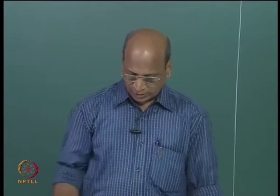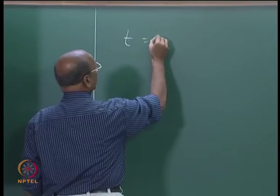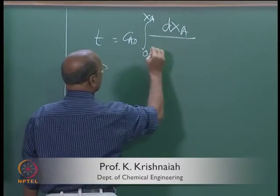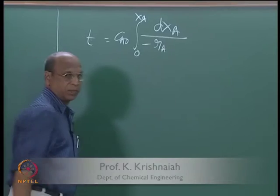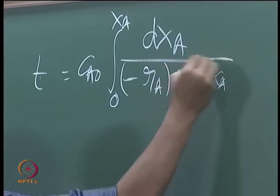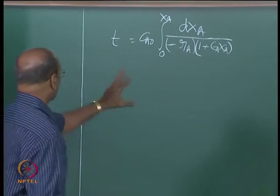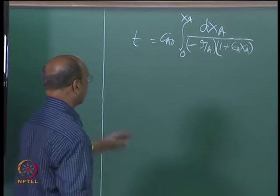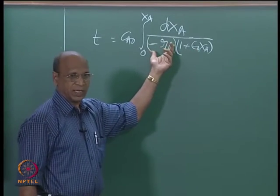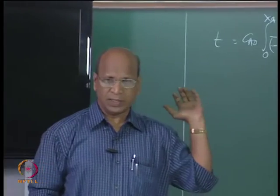How do you calculate volume? The general expression we derived in the earlier class was T equal to CA0 integral 0 to XA dxA by minus RA. For constant volume system otherwise it is 1 plus. This is the general expression, if it is constant volume then epsilon equal to 0, so this becomes 1 and this becomes simply minus RA. Then here we do not have specifically volume coming out from the rate, I mean the design expression.